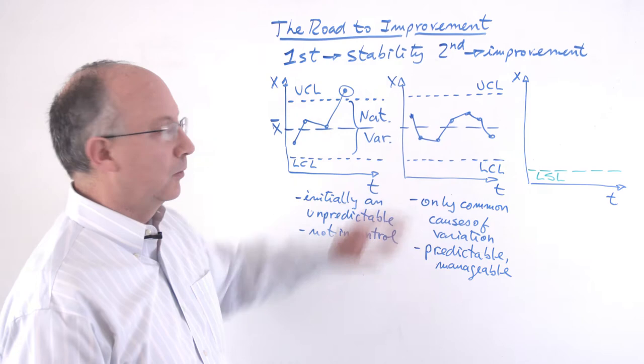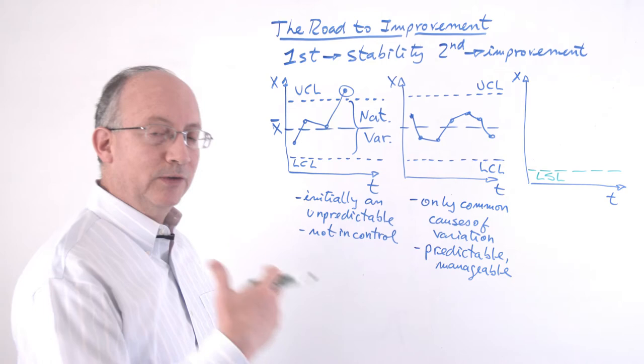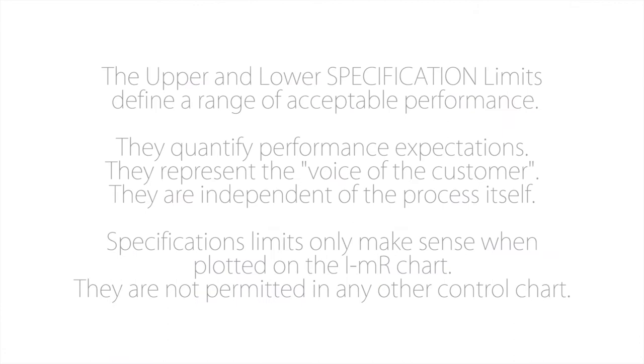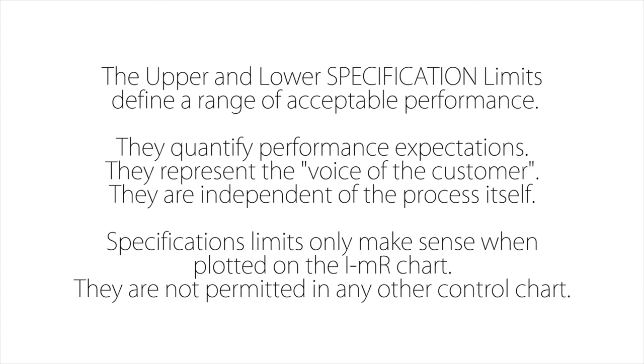What we had here in blue, first of all, was what is the voice of the process. This is how the process is behaving, because the process is a system of causes, one of which manifestations or metrics is this particular variable X that happens to have this behavior.